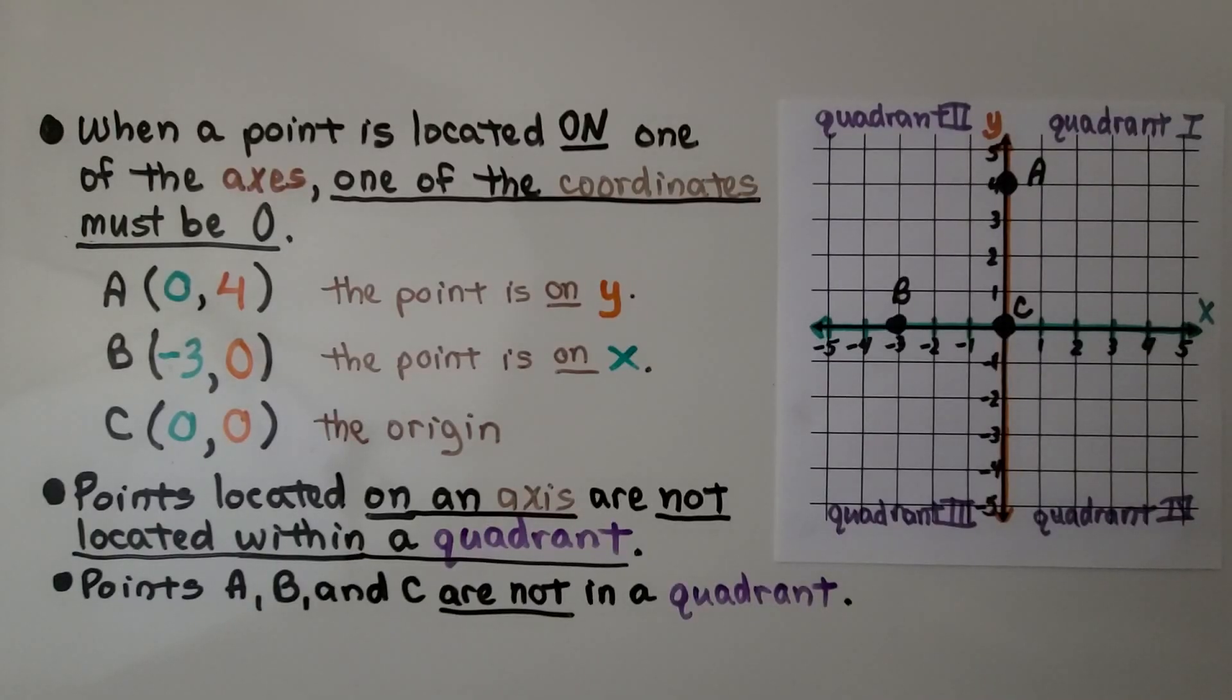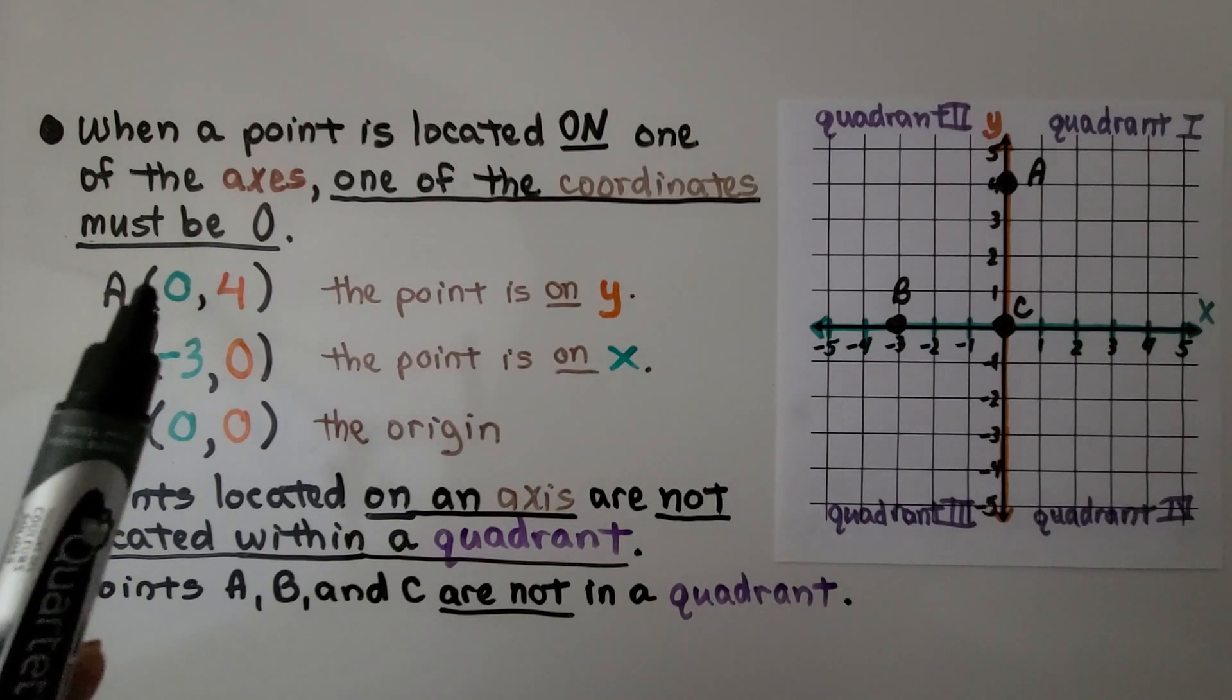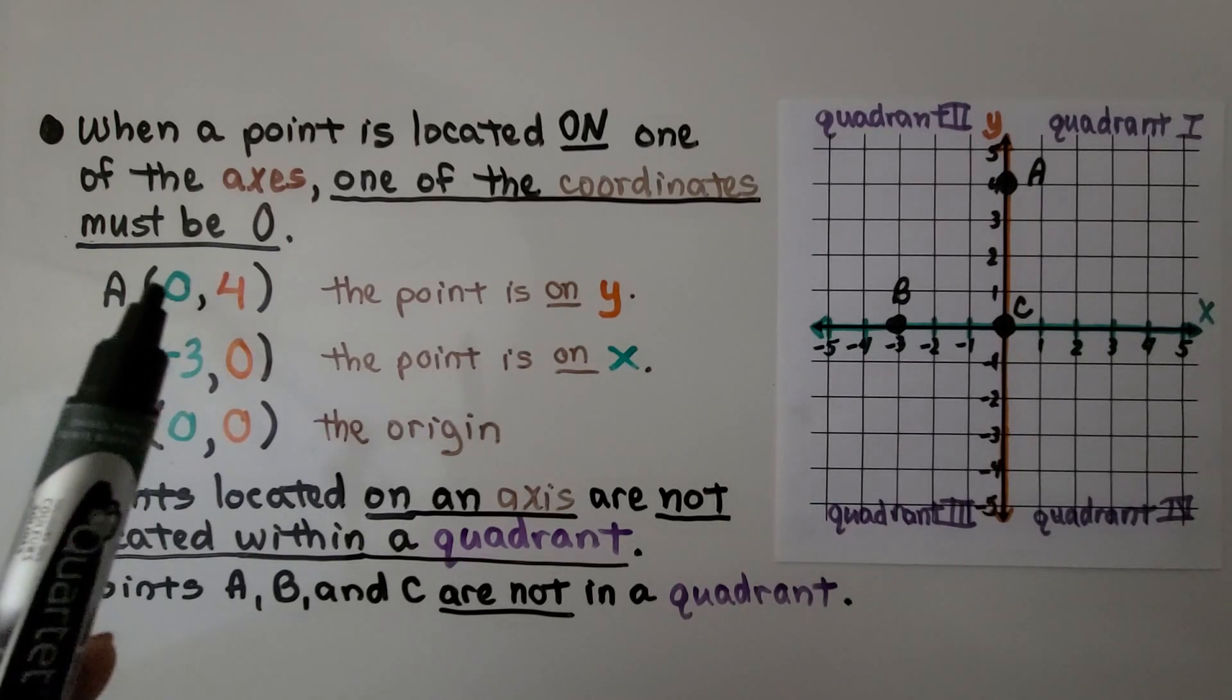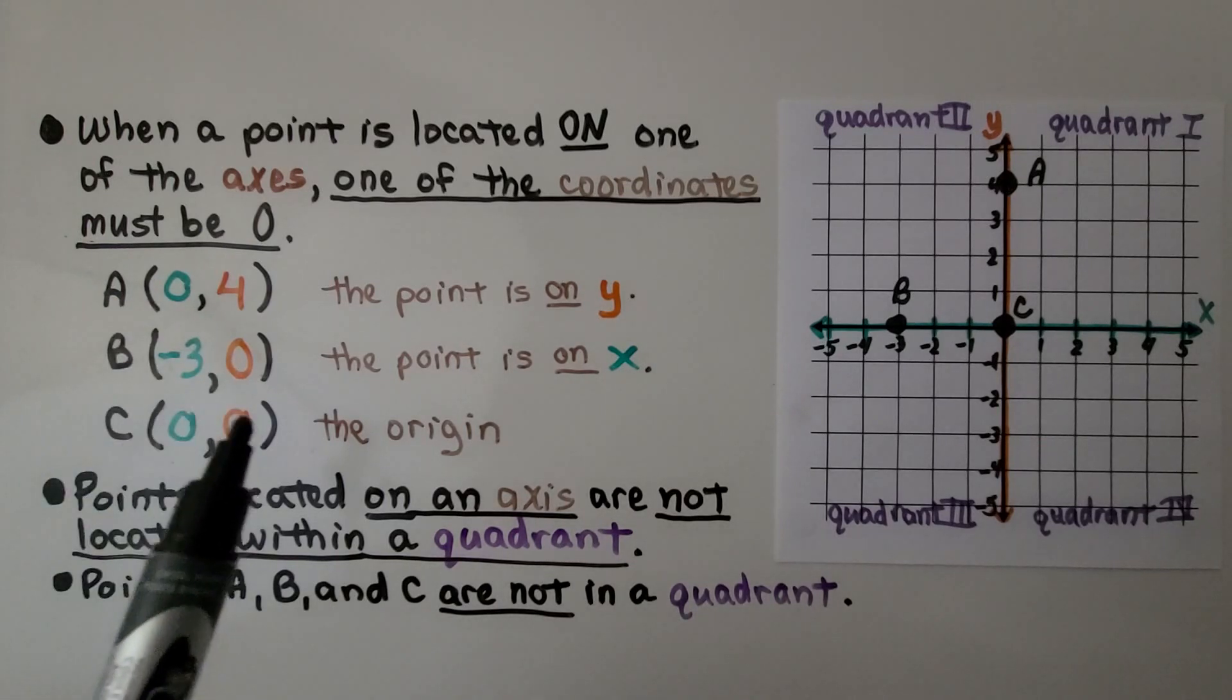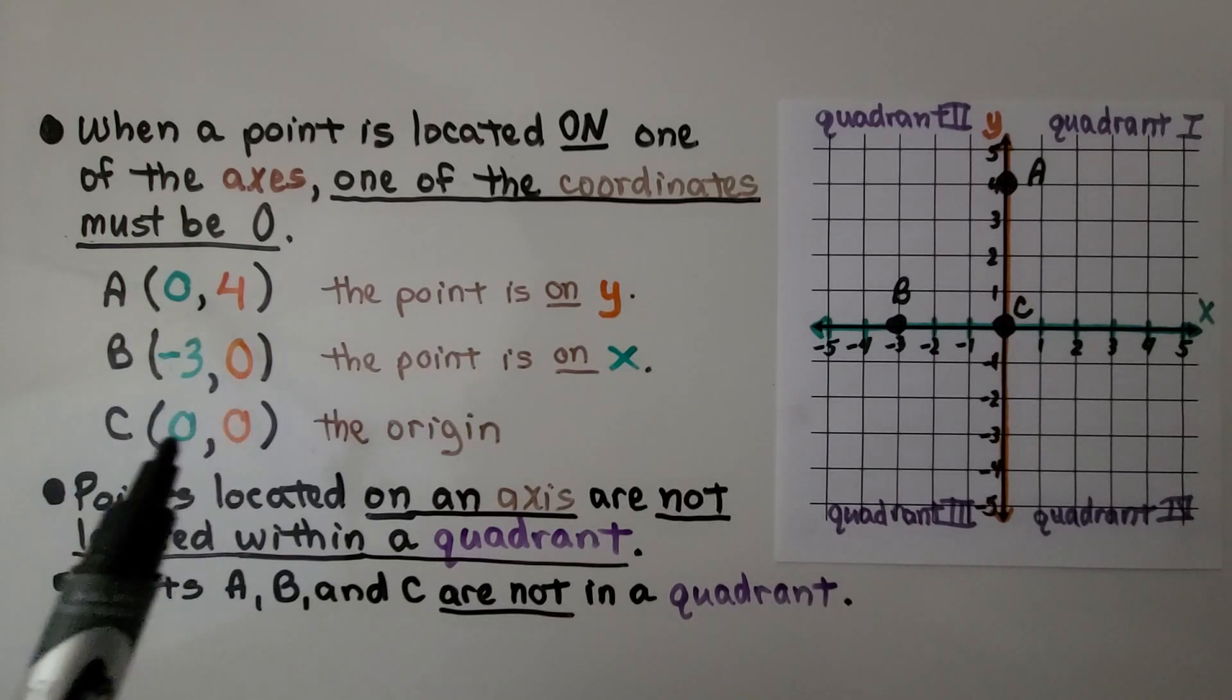When a point is located on one of the axes, one of the coordinates must be zero. We have points A, B, and C. And if you look, we have one of the coordinates is a zero. We have a zero here, a zero here. This one, they're both zero for x and y.